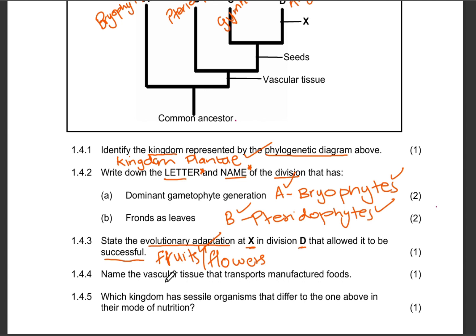Question 1.4.4: name the vascular tissue that transports manufactured food. Remember, we've got two vascular tissues: xylem and phloem. The xylem transports water and minerals, and the phloem transports manufactured food. So the answer here is phloem. One mark.